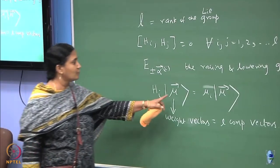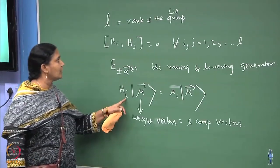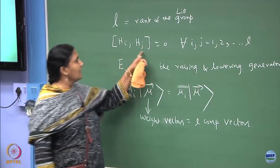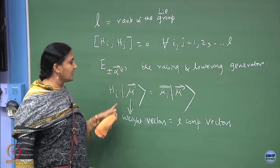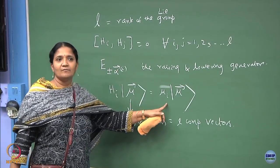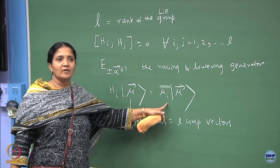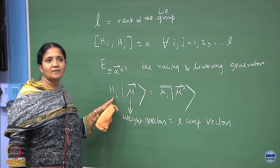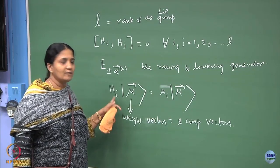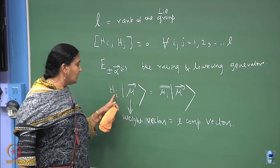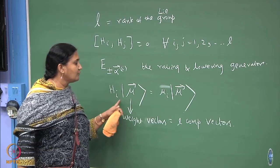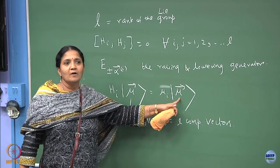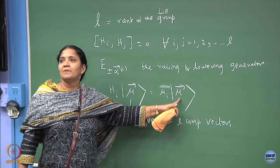These are what we call weight vectors — L-component vectors. For every h_i, the corresponding i-th component is pulled out by the h_i operator, and since there are L of them, this gives you an L-component vector.